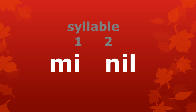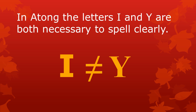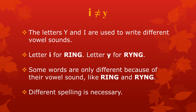This may work very well for Garo, but for Atong, the letters E and Ö are both necessary to spell words clearly. They are both necessary because they represent two different and very important vowel sounds. Words like Rien, meaning sweet potato, and Reng are only different because of their vowel sound, and therefore they need to be spelled differently.